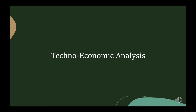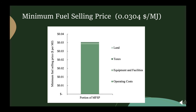The techno-economic analysis resulted in a minimum fuel selling price of about 3 cents per megajoule of butanol. Typical selling prices from other TEAs in literature on ABE fermentation have resulted in minimum selling prices closer to 6 cents per megajoule. While our results are within that ballpark, we attributed our lower selling price to underestimation of the capital equipment used during fermentation and separation, as well as differences associated with biomass prices across feedstocks.